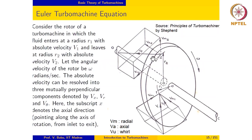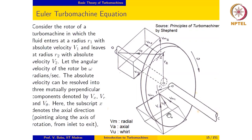Consider the rotor of a turbo machine, shown here. This rotates with an angular velocity omega in the clockwise direction. Fluid enters this rotor with an absolute velocity V1 and leaves with an absolute velocity V2. The absolute velocity has components in three directions: radial, axial, and tangential, also known as the whirl component. The component of velocity in the radial direction, moving outwards radially from the shaft, is referred to as the radial velocity.